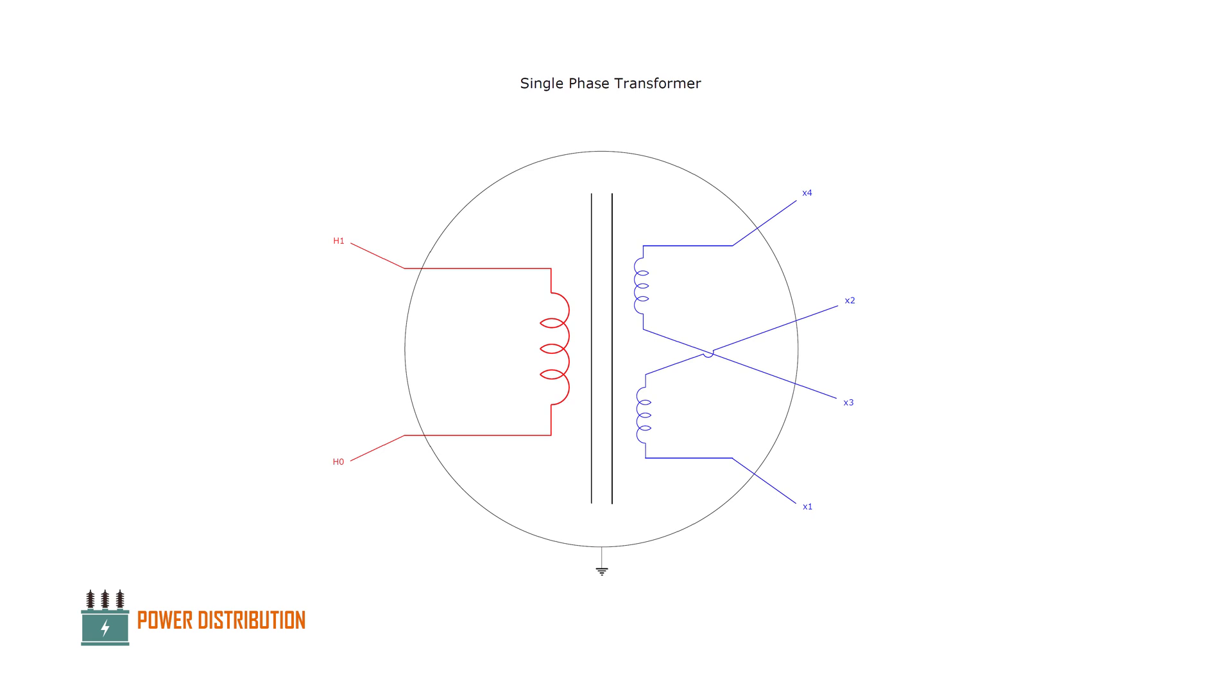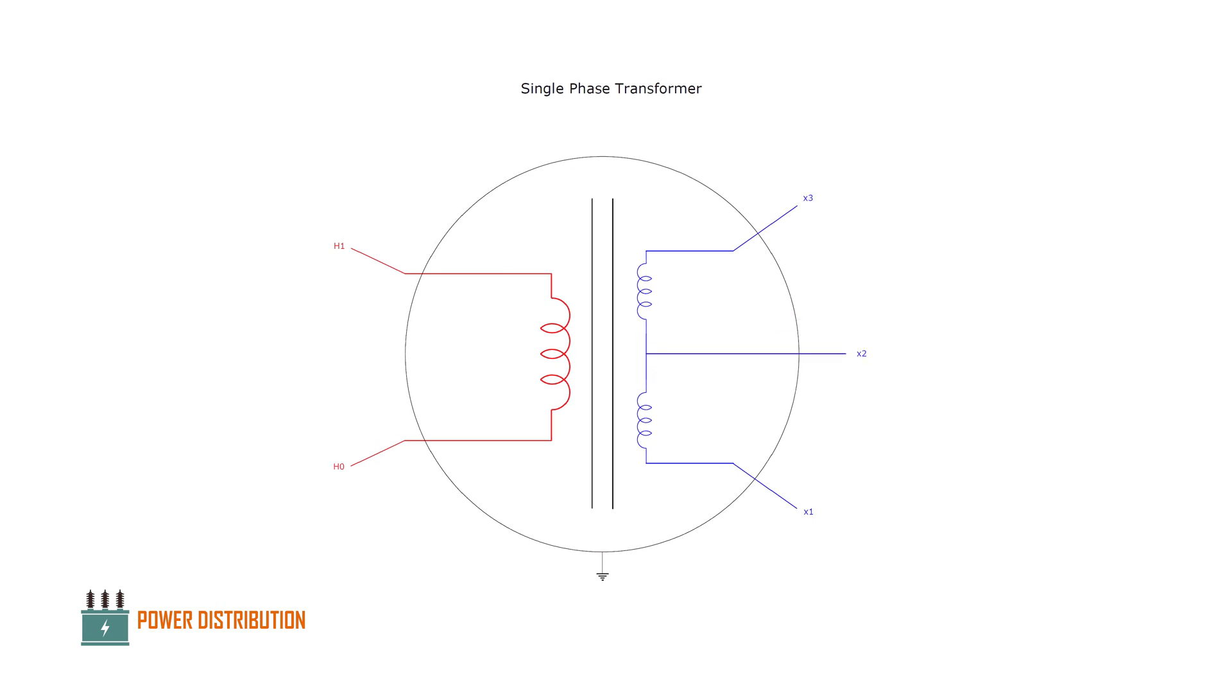In this test we are using four bushing secondary windings, but there are some other configurations, for example three bushing on the secondary windings. In this case, the X2 and the X3 on the windings are directly connected together.